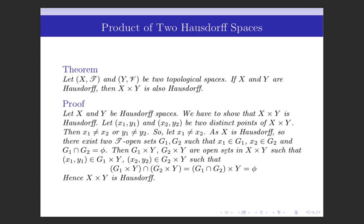These are basic open sets, and so we have two open sets in X cross Y such that (x₁, y₁) ∈ G₁ × Y and (x₂, y₂) ∈ G₂ × Y. Moreover, (G₁ × Y) ∩ (G₂ × Y) = (G₁ ∩ G₂) × Y = ∅ × Y = ∅, by set theory, since G₁ ∩ G₂ = ∅. So we have shown that for any two distinct points (x₁,y₁) and (x₂,y₂) in X cross Y, there exist two disjoint open sets containing them respectively. Hence X cross Y is Hausdorff.